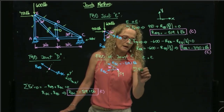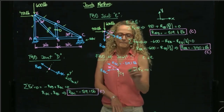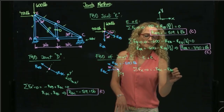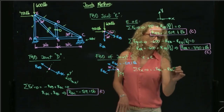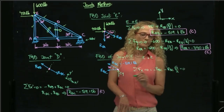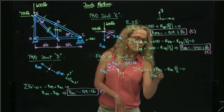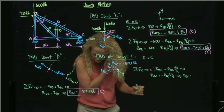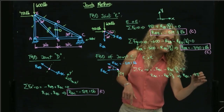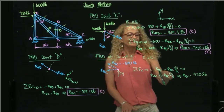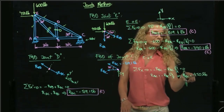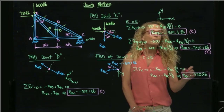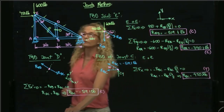Adding forces in x at joint C equals zero: negative R_BC minus R_DC times cosine of 30, which is square root of 3 over 2, equals zero. From here, I can find R_BC. Since R_DC is negative, the two negatives give a positive value for R_BC, which equals 450 pounds. A positive value means this member is in tension. We could also add forces in y to find the external reaction Cy, but we were asked only to find member forces.